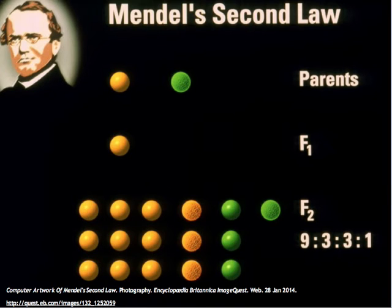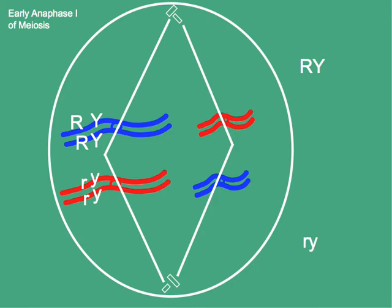How lucky was Mendel to have chosen a pair of alleles that were not located next to each other? Suppose it happened that the allele for shape — whether round or wrinkled — and the allele for color — yellow or green — were located very close by on a chromosome. Then would the chance of them separating from each other be just as likely as them staying together? Would the recombinants be just as likely? Fortunately, Mendel was not faced with this dilemma.